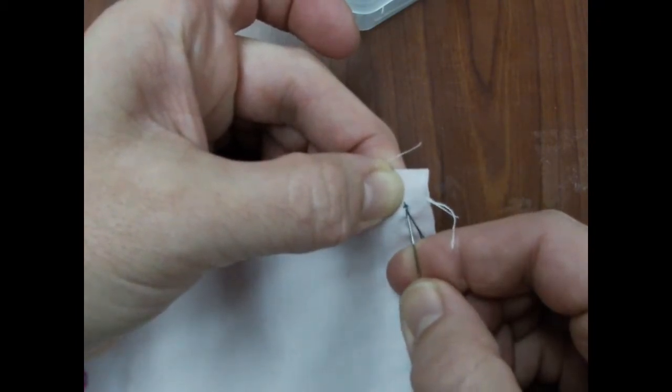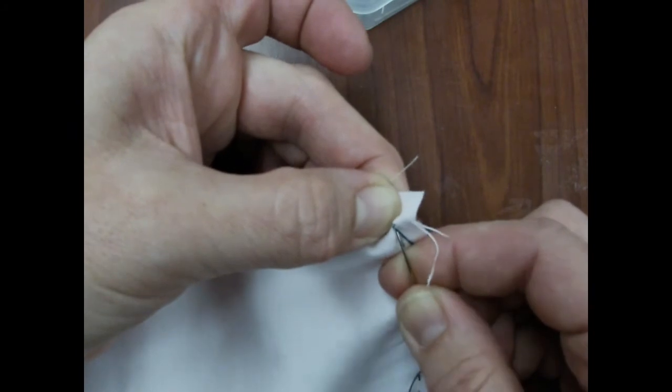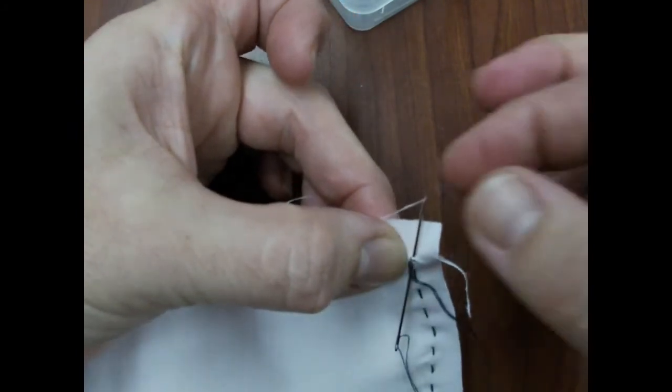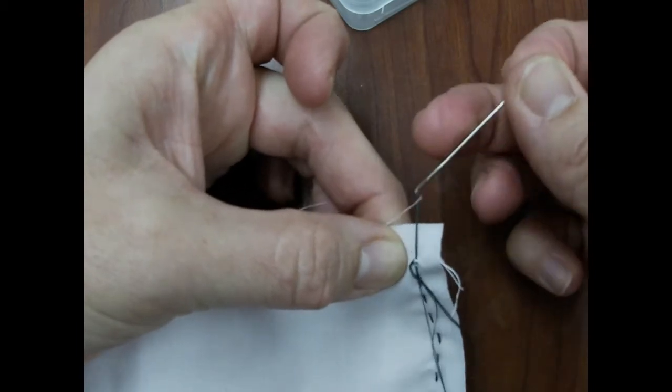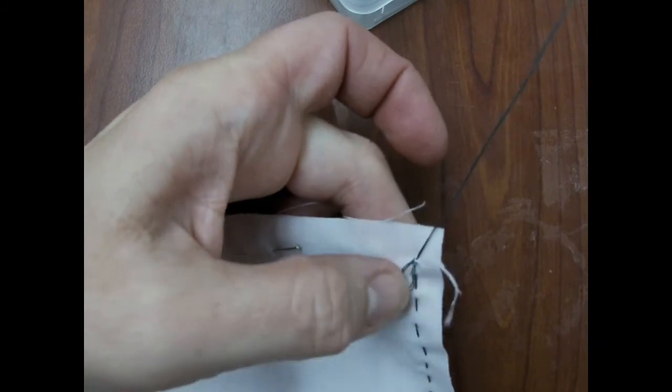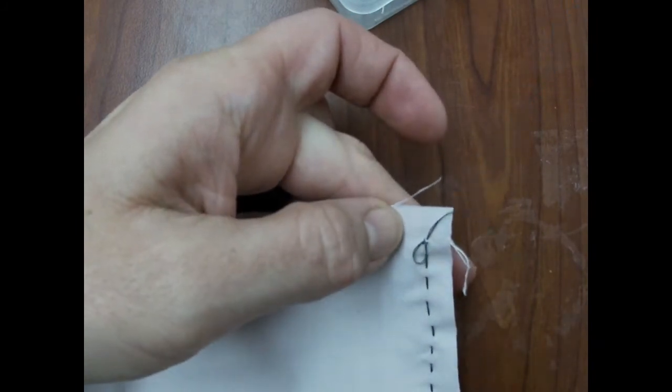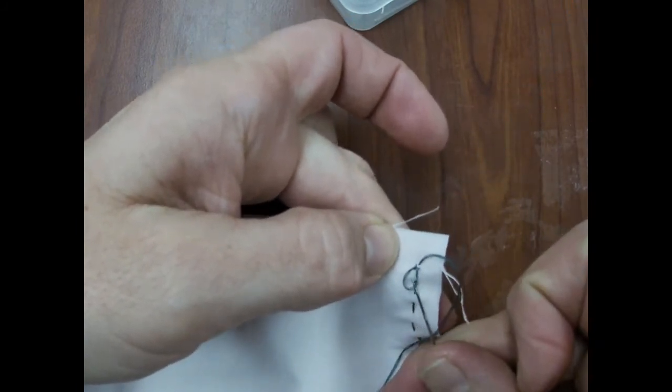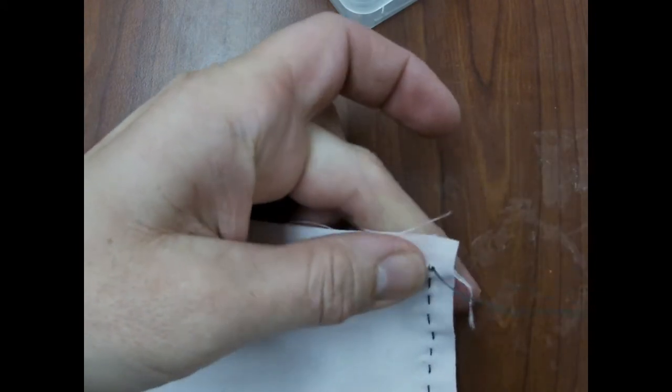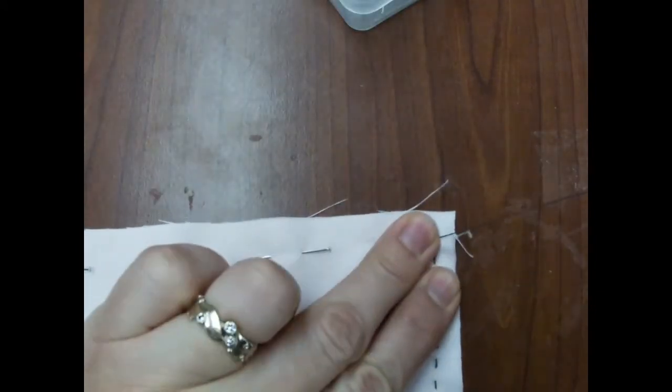You can go through right in the same spot or right next to it as long as it's a tiny lift of a couple threads of the fabric. Pull until you have a loop. And then you're coming up from underneath the loop and pulling it tight. Very nice.